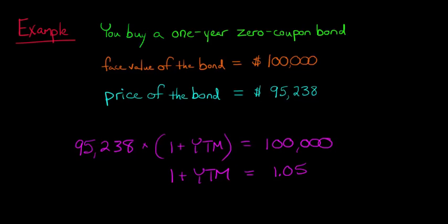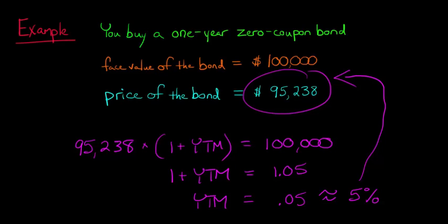And so we just subtract 1 from each side, and now we have our yield is going to be 0.05, or we can just think of that as a percentage, 5%. So what does this mean? This means that the rate of return, if we were to buy a bond today for $95,238, it didn't have any periodic interest payments, it's just a 1-year bond. So a year from now, we get $100,000 back. We earned a rate of return of 5%. That's all that's saying.